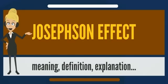The DC Josephson effect had been seen in experiments prior to 1962, but had been attributed to super shorts or breaches in the insulating barrier, leading to direct conduction of electrons between the superconductors. The first paper to claim the discovery of Josephson's effect and to make the requisite experimental checks was that of Philip Anderson and John Royal.